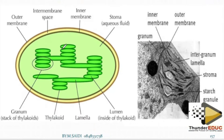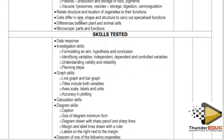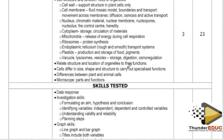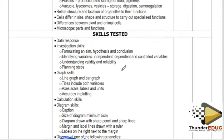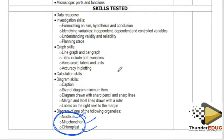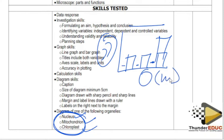Know the mitochondrion, the chloroplast, and the nucleus. They have been highlighted in the material — you must know the drawing of at least one nucleus, mitochondrion, and chloroplast. Lastly, for graphs: bar graphs and line graphs must have a title. Bars must be the same size and spacing. The y-axis and x-axis must be labeled with units.